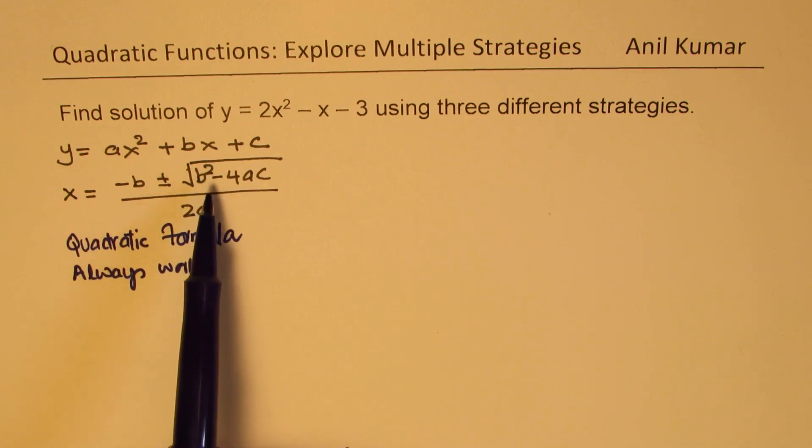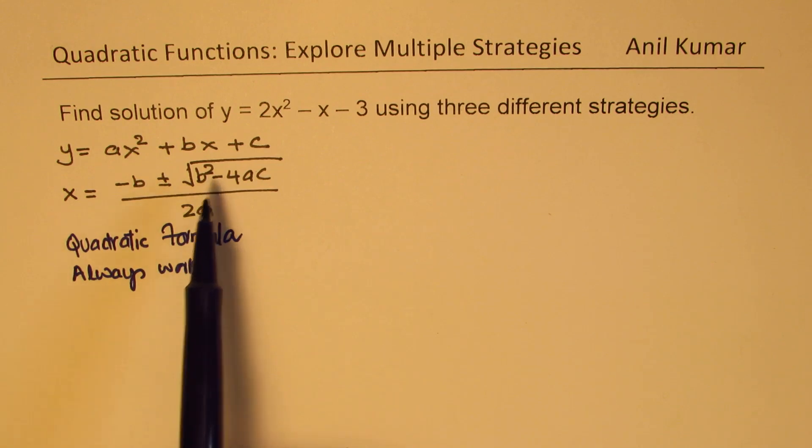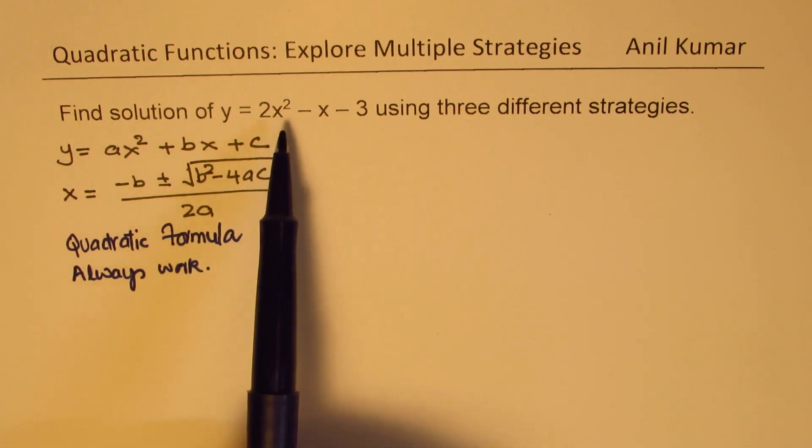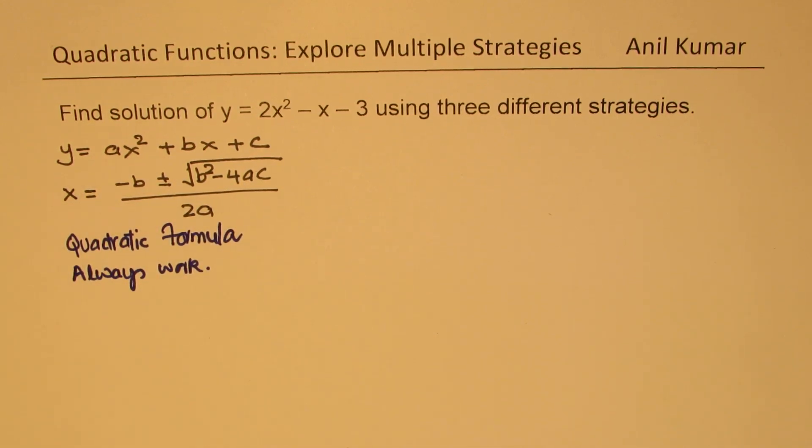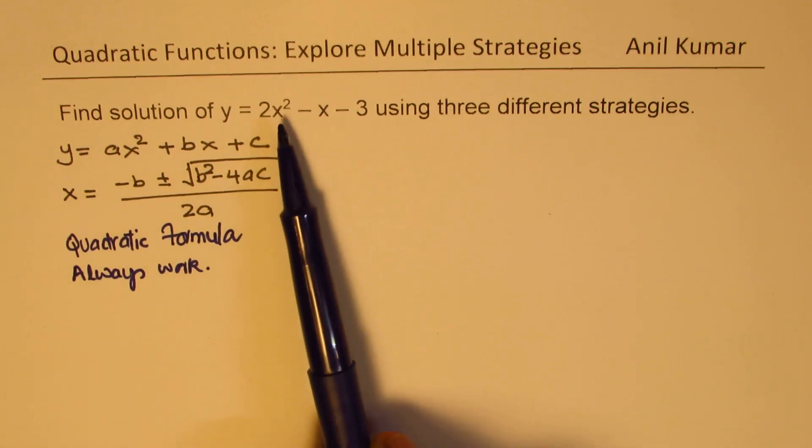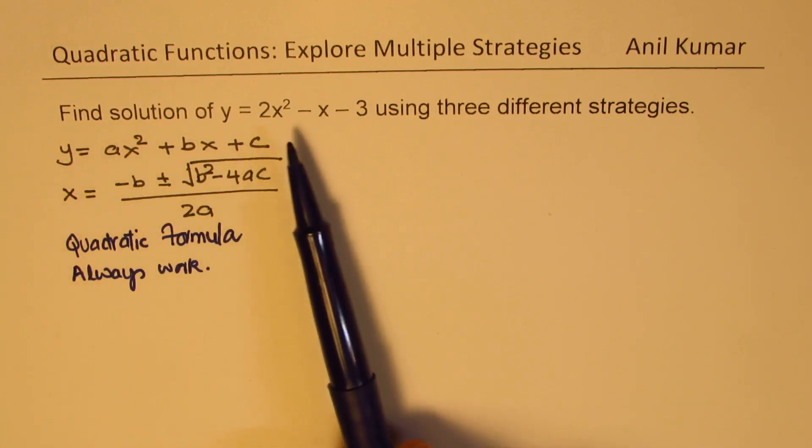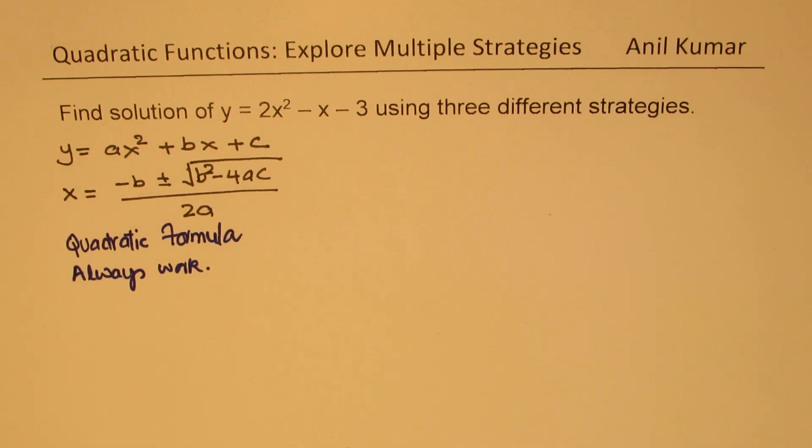If b squared minus 4ac is non-negative we get real solutions. If b squared minus 4ac is negative then we may get imaginary solutions. However, for any quadratic equation using this formula we can always find solution and there will be two solutions for every equation. We could have same values, we may have imaginary values or we may have real values. That is very important to understand.